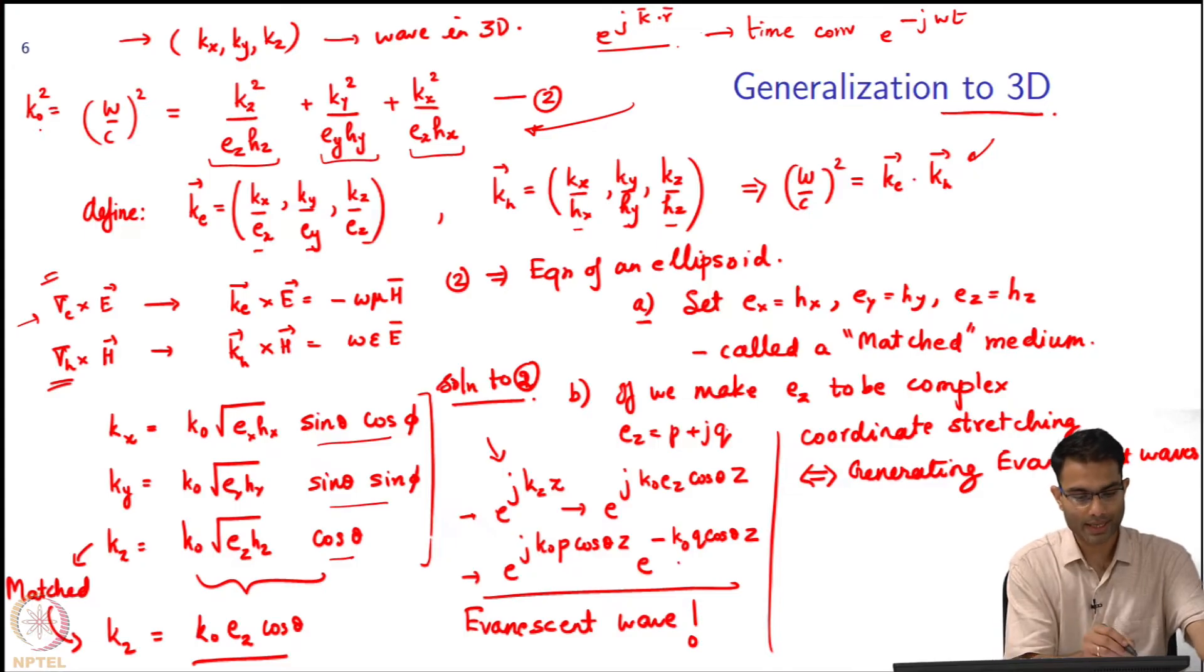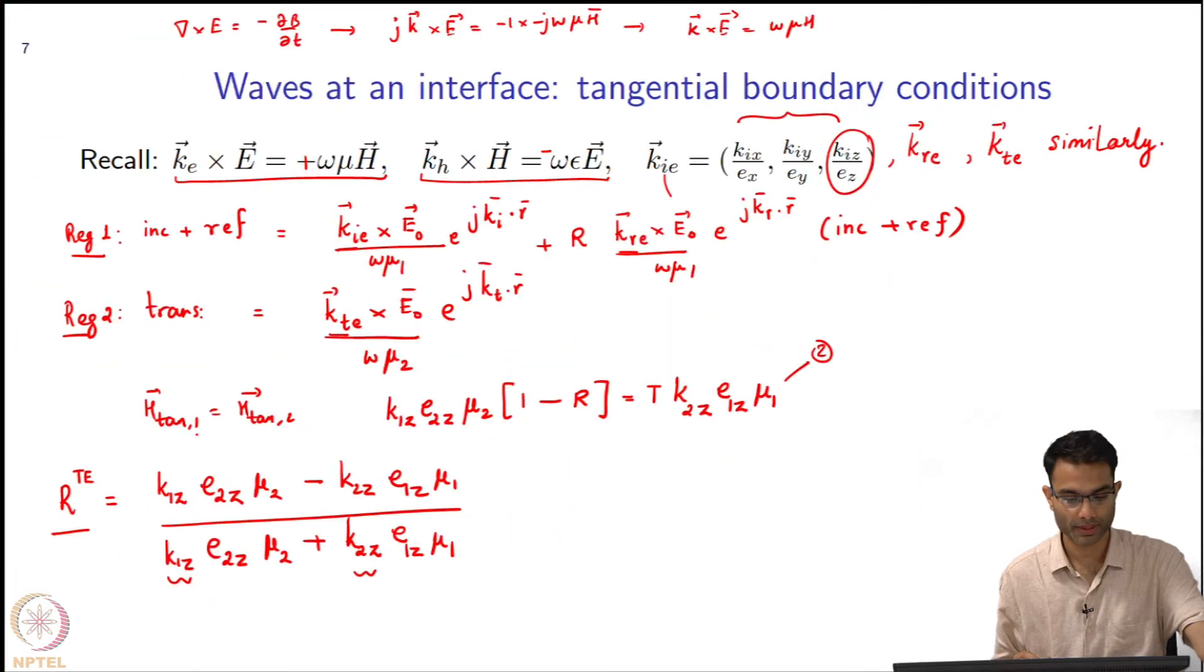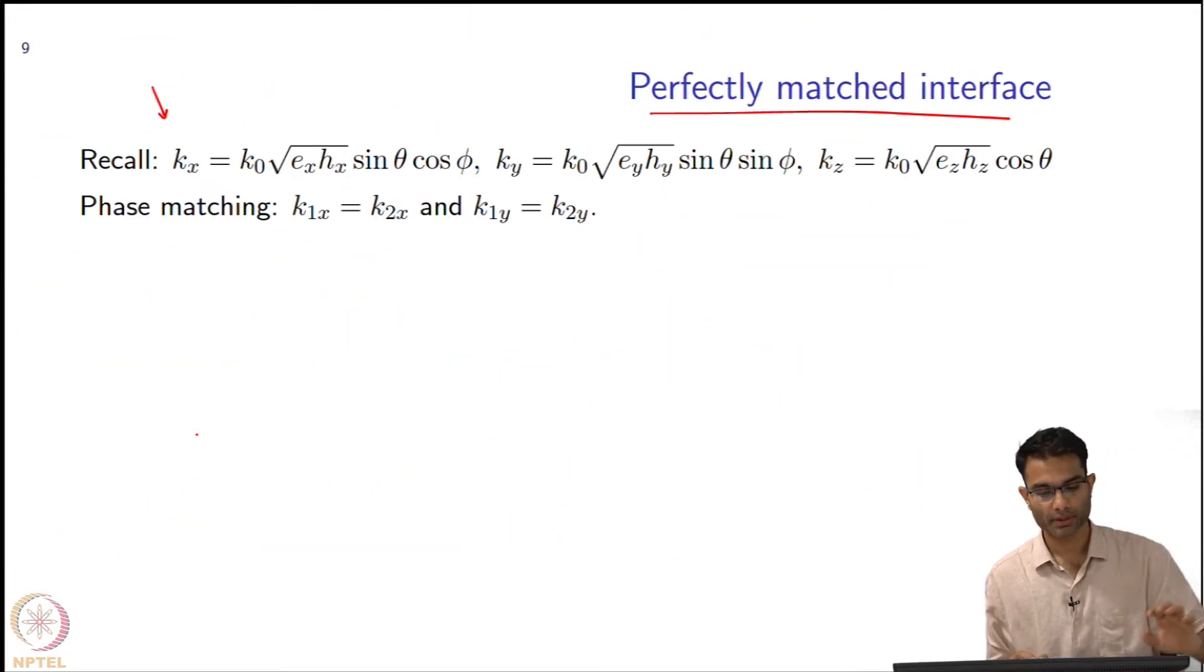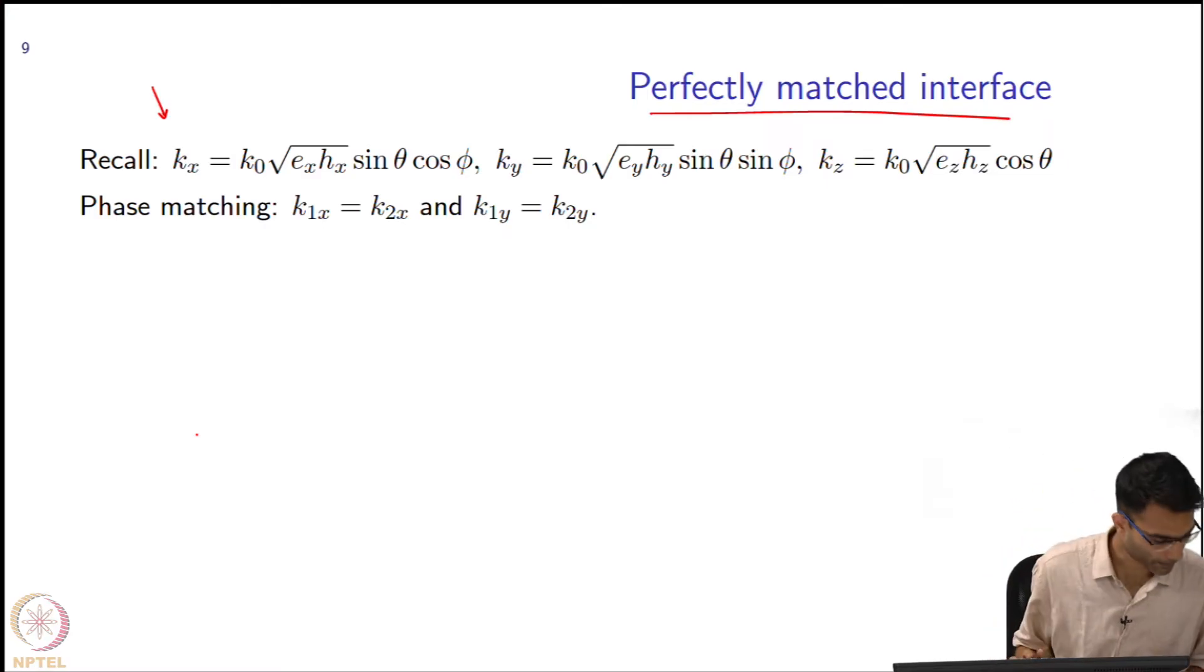And this k naught over here was omega by c. I am just rewriting it for your convenience - this is my k_x, this is my k_y, and this is my k_z.